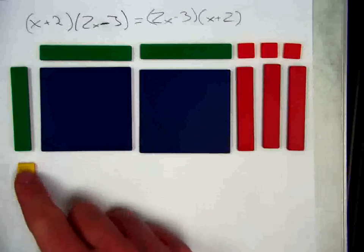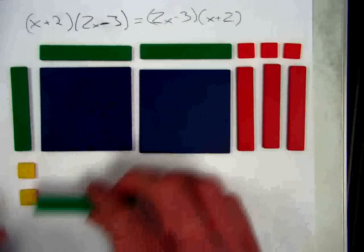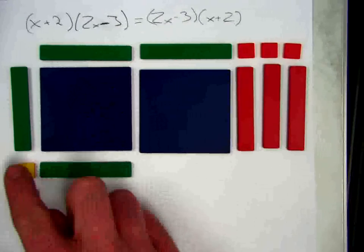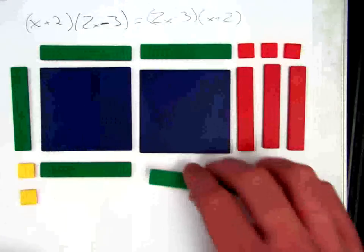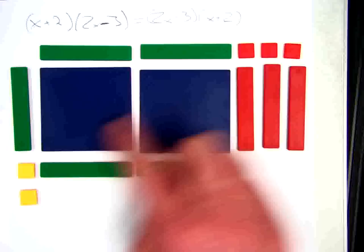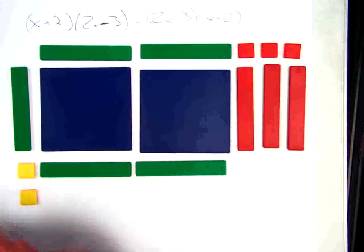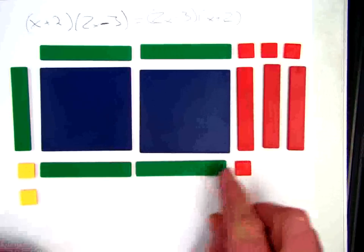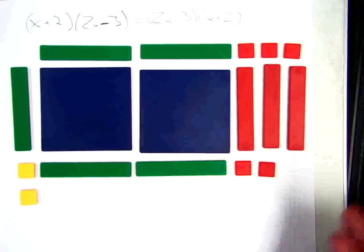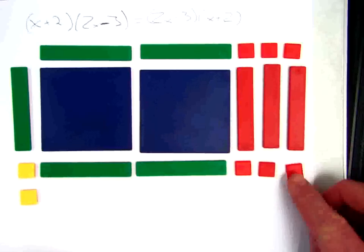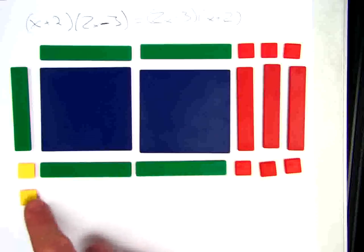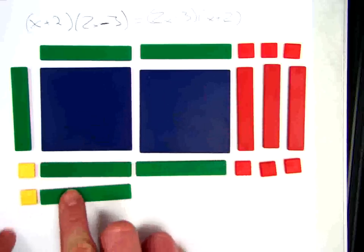Now I'm just going to move down to this unit right here. 1 times x is x. 1 times x is x. 1 times negative 1 is negative 1. 1 times negative 1 goes there and there. And then my next row is going to be exactly the same as the row above it. So I'm just going to fill that in.